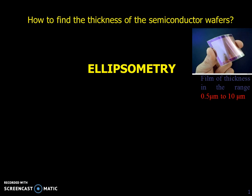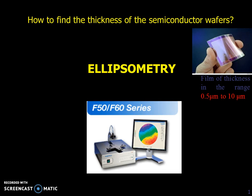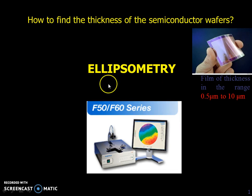By using the interference method we can find the thickness of the film. The thickness of the film can be evaluated by using a method called ellipsometry. The main background of ellipsometry is interference. This is one of the instruments used to measure the thickness of this particular film. If there is any non-uniform thickness of the film, we can observe that variation of thickness on the surface. The thickness of the film is evaluated using a technique called interference.